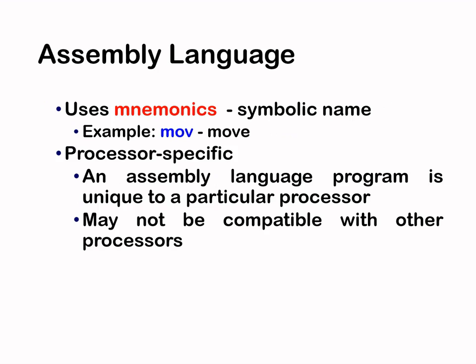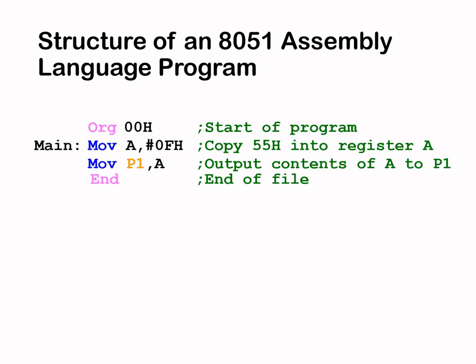Assembly language uses mnemonics, which are symbolic names. An example I've used in my program is MOV, which is a short form for 'move'. Assembly language programs are unique to a particular processor — in general, assembly languages are not compatible with other processors.